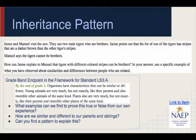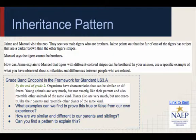Jamie and Manuel visit the zoo. They see two male tigers who are brothers. Jamie points out that the fur on one of the tigers has stripes that are darker brown than the other tiger's stripes. Manuel says the tigers cannot be brothers. How can Jamie explain to Manuel that tigers with different colored stripes can be brothers? Use a specific example of what you have observed about similarities and differences between people who are related. Grade band endpoint for standard LS3.A: by the end of grade 2, organisms have characteristics that can be similar or different. What examples can we find to prove this true or false from our own experience? How are we similar and different to our parents and siblings? Can you find a pattern to explain this?